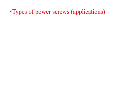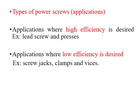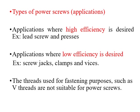Regarding types of power screws: applications where high efficiency is desired include lead screws and presses, while applications where low efficiency is acceptable include screw jacks, clamps, and vises. Threads used for fastening purposes, such as V-threads, are not suitable for power screws. So there are two broad categories: high efficiency and low efficiency types.